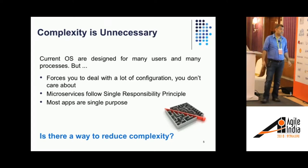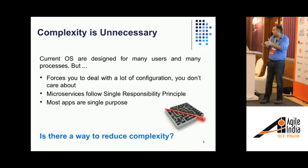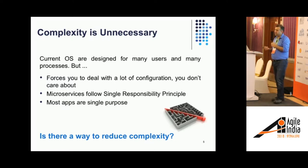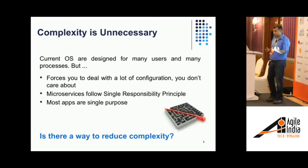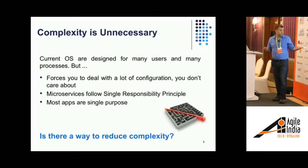These microservices follow the single responsibility principle: rather than having a jack-of-all-trades system, focus on one thing and do that one thing really, really well. The current scenario is kind of an anti-pattern in the modern world. Most apps are single purpose, most microservices want to have one or two endpoints, yet we have to inherit this huge bulk of code that we don't use. The question is: is there a way to reduce the complexity?